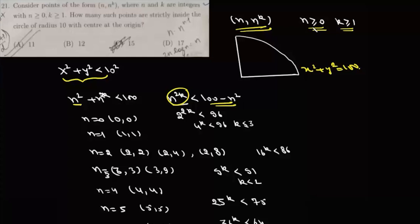Now n starts from zero, so if we take n as zero, we get only one point (0, 0). If we take n as 1, again we'll have one point (1, 1). Now for n equals 2, it'll be 2^(2k) should be less than 96, or 4^k should be less than 96.